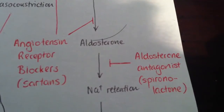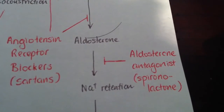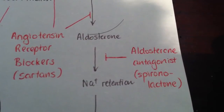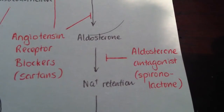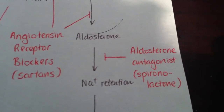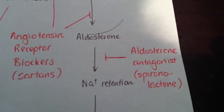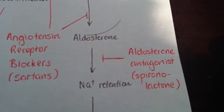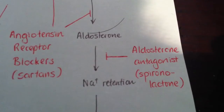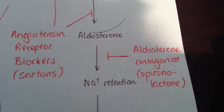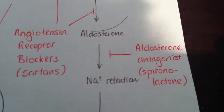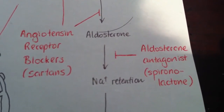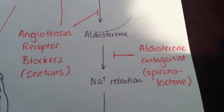We can also use aldosterone antagonists such as spironolactone, which is also a diuretic, but we don't use spironolactone for its diuresis effect because it's weak as a diuretic. If we do want a diuresis effect, we would use furosemide, which is a more potent loop diuretic, which we do use in heart failure patients to help maintain their fluid balance. But that's for symptom management — it doesn't actually slow down the disease progression.